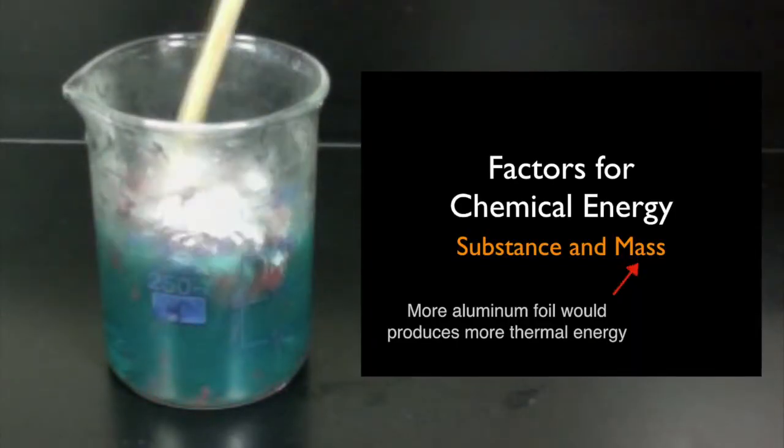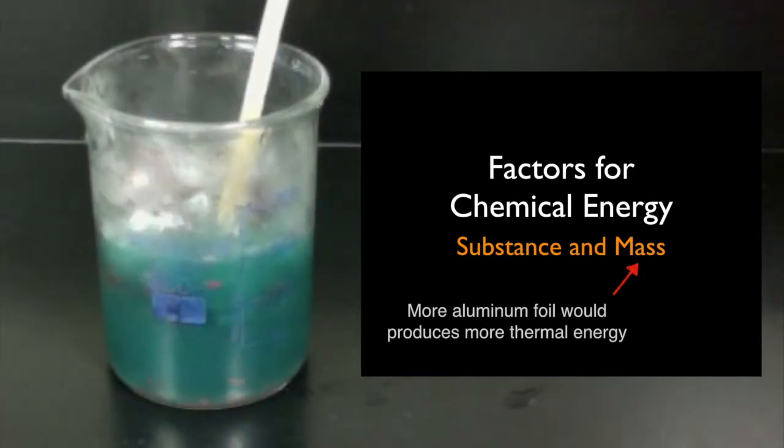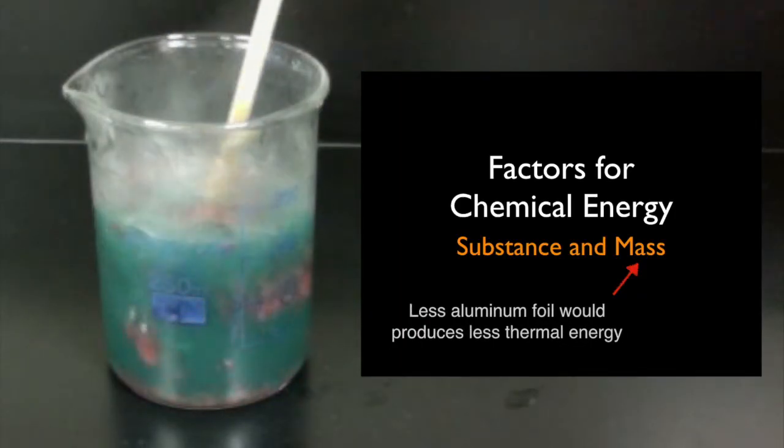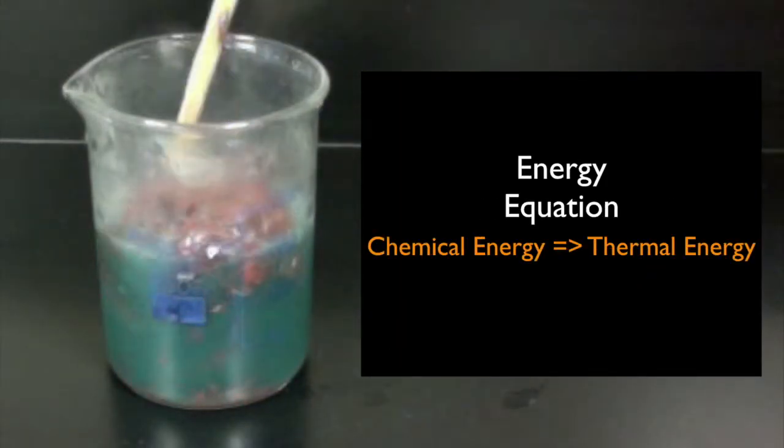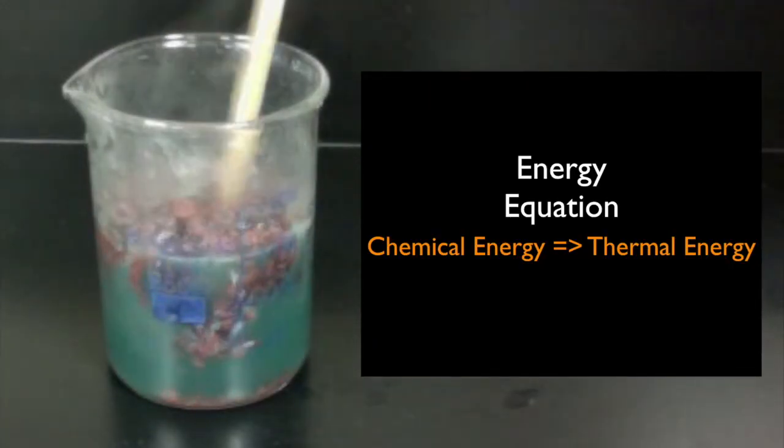Mass is also a factor for chemical energy. If we put more aluminum foil and copper chloride together, we would expect to get more thermal energy out of the reaction. The net result of our chemical reaction is that chemical energy is being converted into thermal energy.